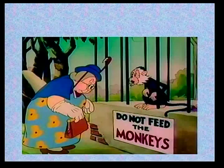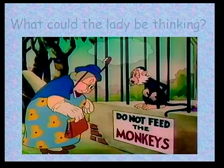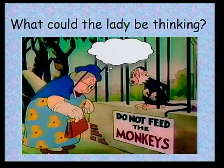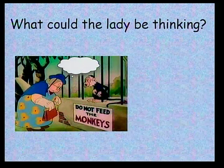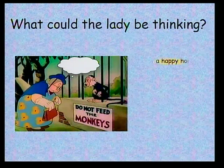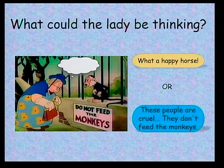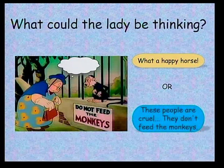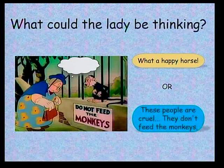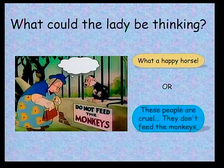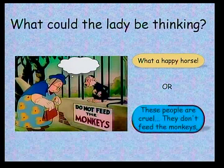Let's look at this picture. What could the lady be thinking? Is she thinking 'What a happy horse?' or 'These people are cruel, they don't feed the monkeys'? You will agree there is no horse in the picture, so the second option is the correct one: 'These people are cruel, they don't feed the monkeys.'